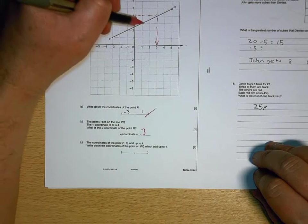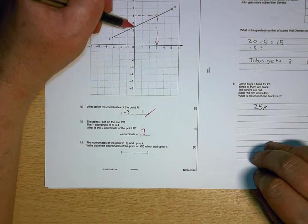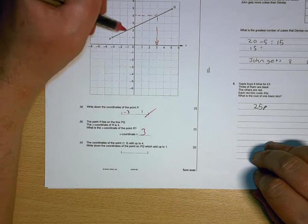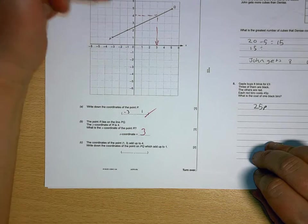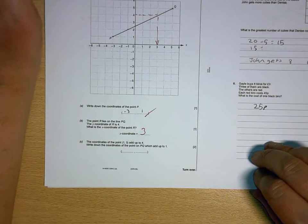A point on PQ where the coordinates add up to 1. So there, they add up to 4. There, they add up to 2 and a half. There, they add up to 1. So it's negative 1, 2.